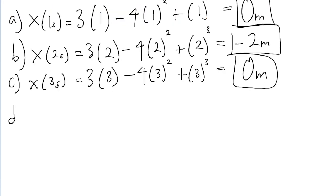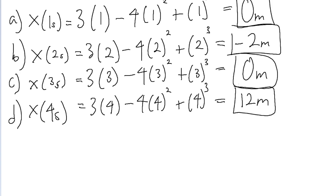Part D, our input is 4 seconds. So it's 3 times 4 minus 4 times 4 squared plus 4 cubed. Put this into a calculator, and we find a position of 12 meters. So those are our positions for those four inputs.